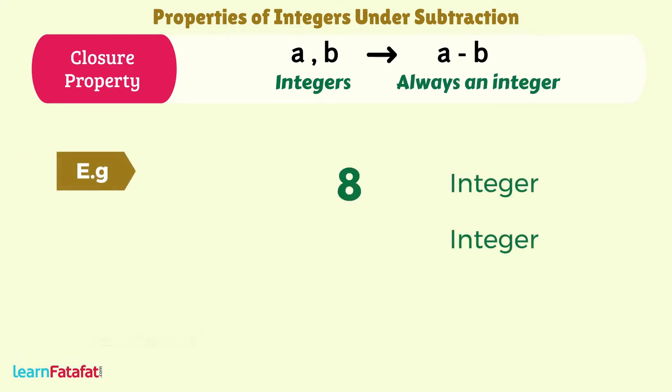For example, 8 minus 6 equals 2, which is an integer. Minus 12 minus 7 equals minus 19, which is an integer. So, the collection of integers is closed under subtraction.